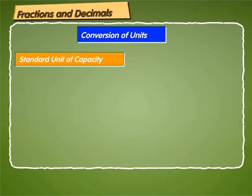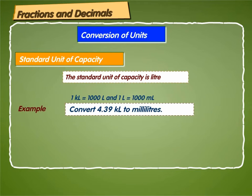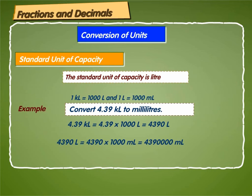Liquids are measured in litres and millilitres. The standard unit of capacity is litre. 1 kilolitre is equal to 1,000 litres and 1 litre is equal to 1,000 millilitres. Let us take an example. Here we have to convert 4.39 kilolitres to millilitres. First, we convert kilolitres into litres: 4.39 kilolitres is equal to 4.39 into 1,000 litres, which is equal to 4,390 litres. Now converting to millilitres: 4,390 litres is equal to 4,390 into 1,000 millilitres, which is equal to 4,390,000 millilitres.